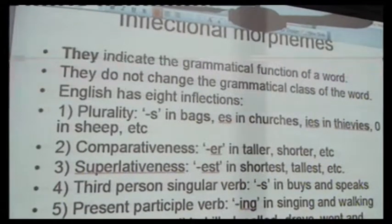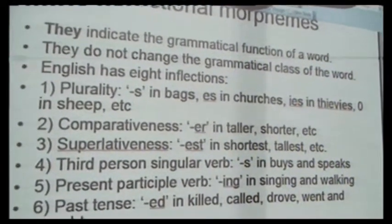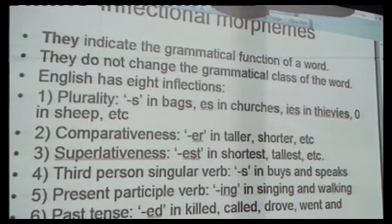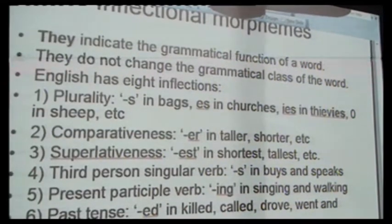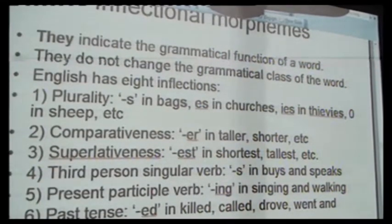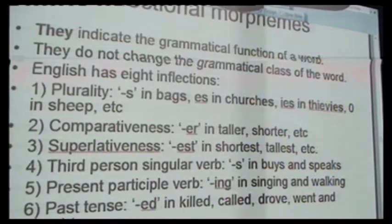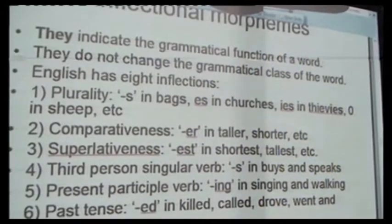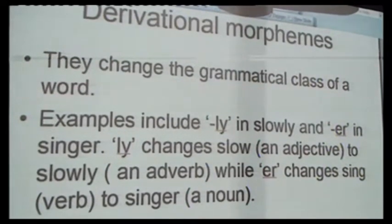Inflectional morphemes are morphemes that indicate the grammatical function of a word. They do not change the grammatical class of that particular word. In English, we have eight inflections: plurality, comparativeness, superlativeness, third-person singular verb, present participle verb, past tense, and past participle. Examples include '-s' which indicates plurality in 'bags,' '-er' in 'taller,' '-est' in 'tallest,' '-ing' in 'singing,' and so on. These inflectional morphemes have to be attached to free morphemes in order to indicate their full meaning.